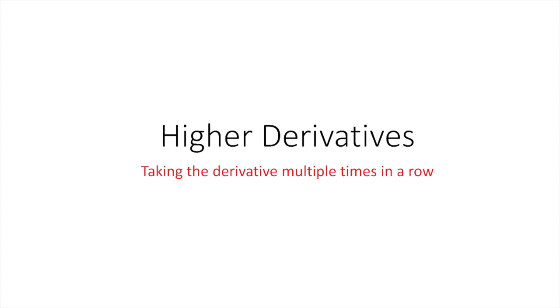Let's look at how to take higher derivatives. So we've learned how to find f prime, or the first derivative of f of x, but what if we have to find f double prime or f triple prime? Simple — just take the derivative multiple times in a row. Let's look at a quick example.